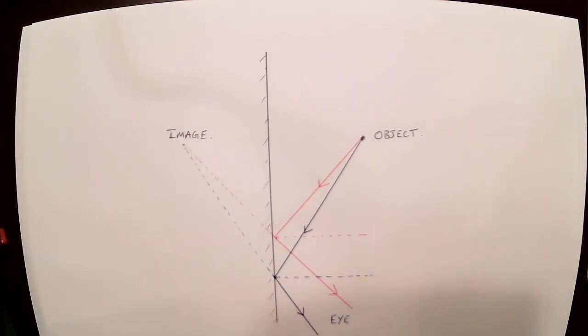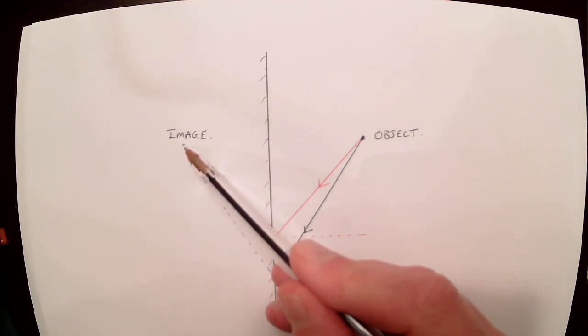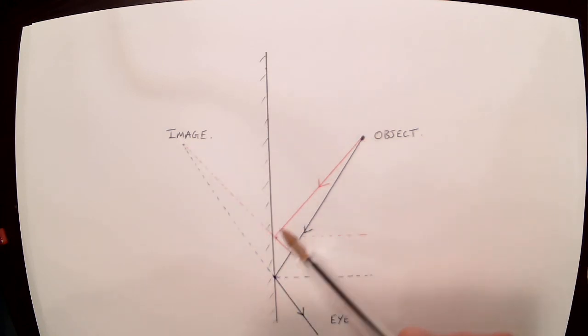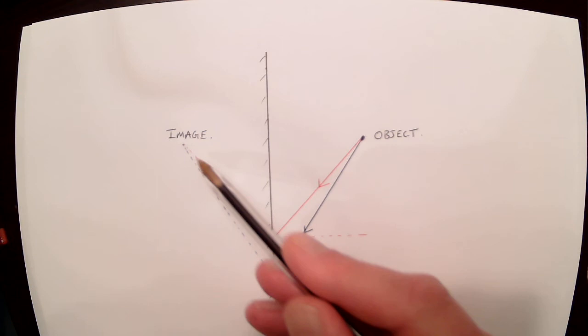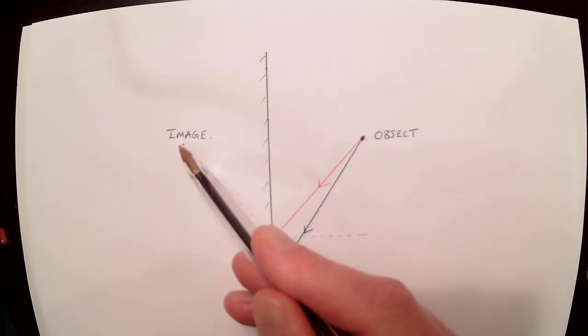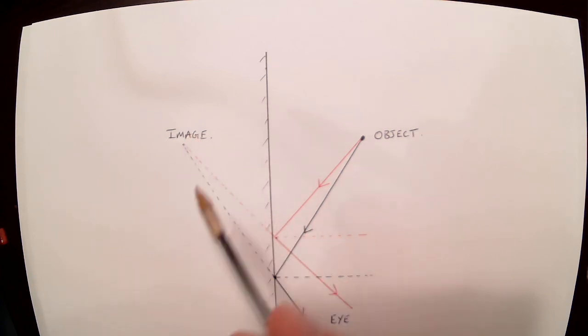This image isn't a real image. It's what we call a virtual image. Why is it virtual? Well, the light hasn't actually come from there. The light has just reflected off here. But when you look in the mirror, it appears as if that is where the rays of light have come from. So it is a virtual image.